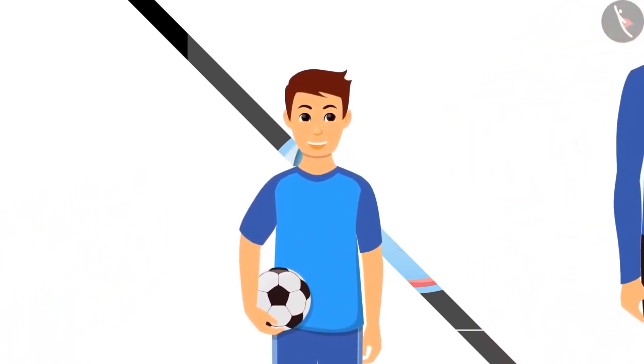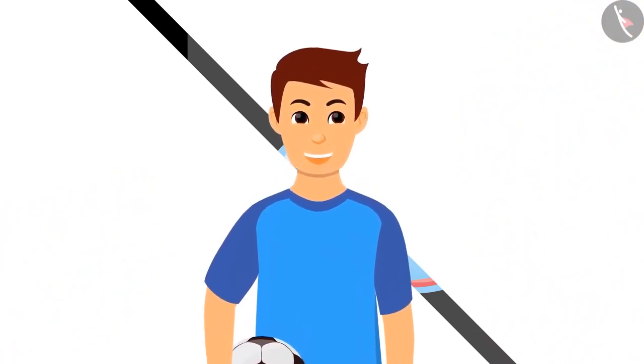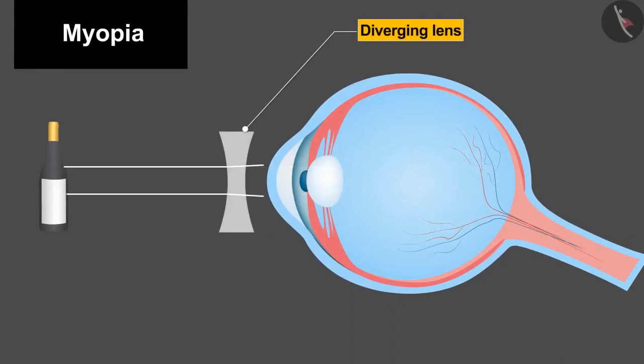As the converging power increases in this defect, hence the converging power will have to be reduced to correct it. But the power cannot be reduced, so it is intended to diverge the light coming from the outside. And for this we can put a divergent lens or concave lens in front of the eyes and let the image be formed on the retina.